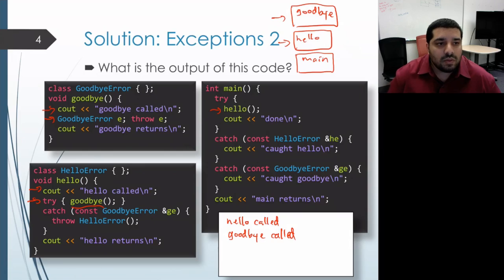Okay, so now it's going to check the catch blocks to see if any of them can catch the actual exception type that was thrown and that was a goodbye error. And indeed, we do have a catch block that can handle a goodbye error. So execution will proceed immediately to the body of that catch block.